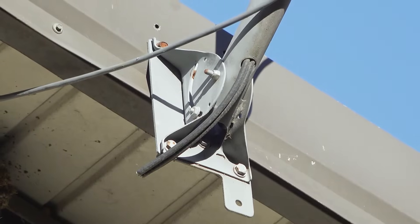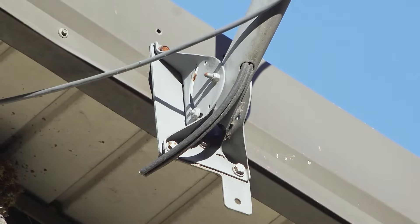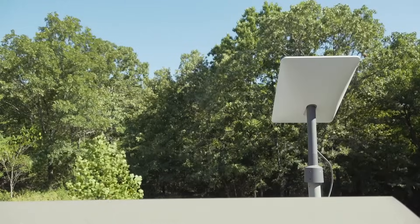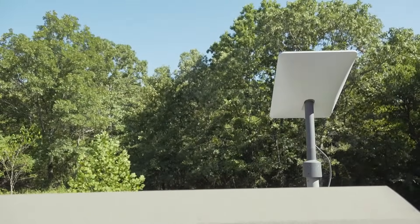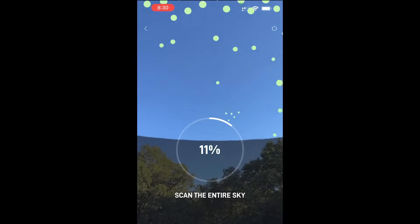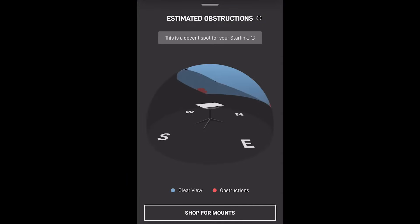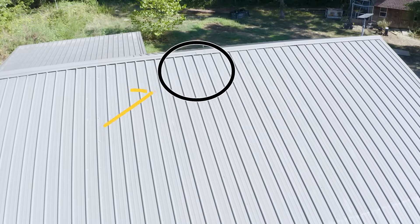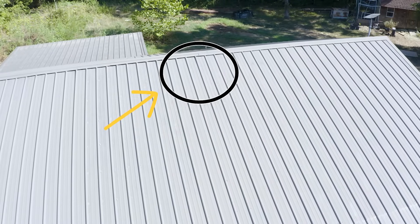Here in Oklahoma the winds can be high, so more points of attachment would be ideal. We've also got some tree coverage interfering with our view of the sky, so we consulted the Starlink app to find the best setup location. And that just happened to be right here in the center of our roof.